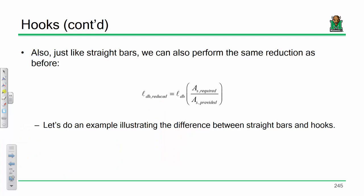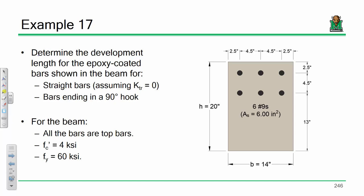One other reduction: area of steel required versus area of steel provided still applies to hooks. If you need three square inches and provide six, you theoretically only need half as much development length, because you don't need to develop it to its full capacity — you only need to develop it to half its capacity since you provided twice as much rebar. You can get serious reductions on development length by accounting for all these factors.